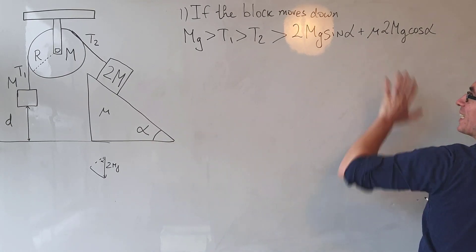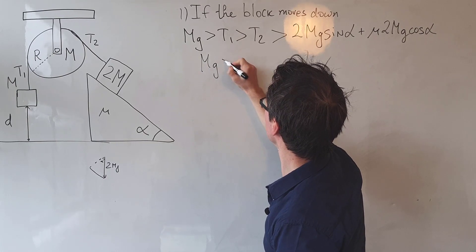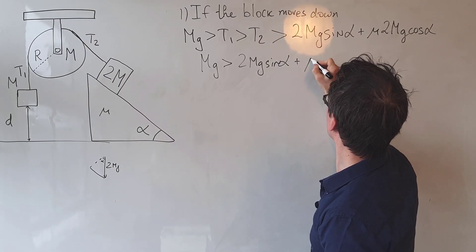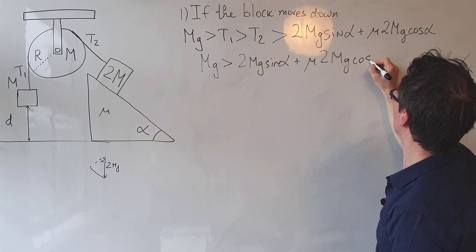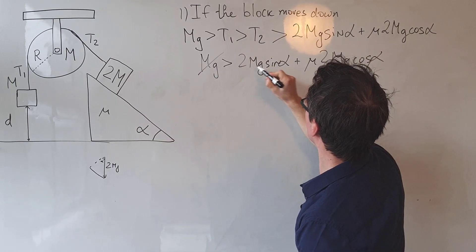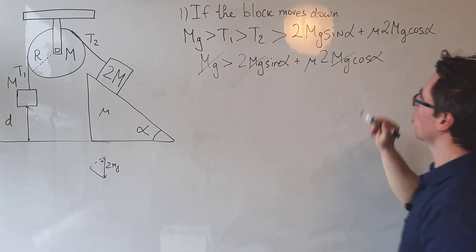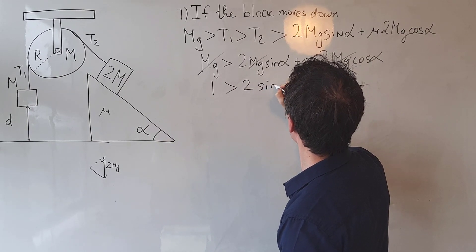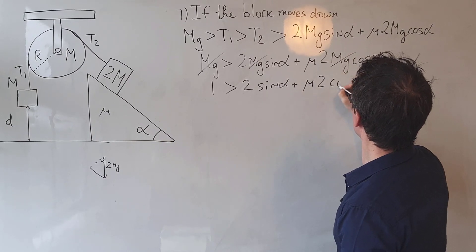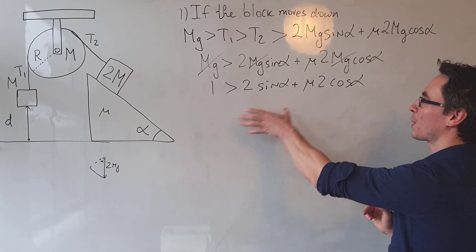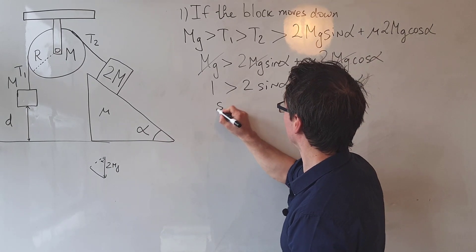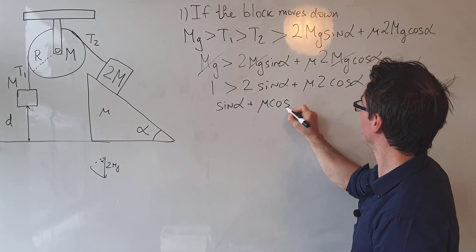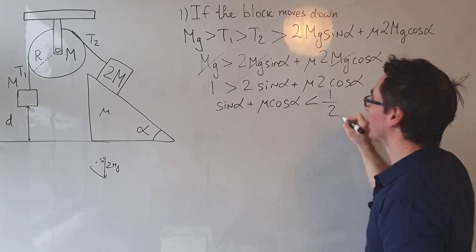Looking at both sides of the inequality, Mg will have to be greater than 2Mg sin(alpha) plus mu times 2Mg cos(alpha). We can cancel out the factors of Mg, leaving 1 greater than 2 sin(alpha) plus mu times 2 cos(alpha). Dividing both sides by 2 and rearranging, we get: sin(alpha) + mu cos(alpha) < 1/2.